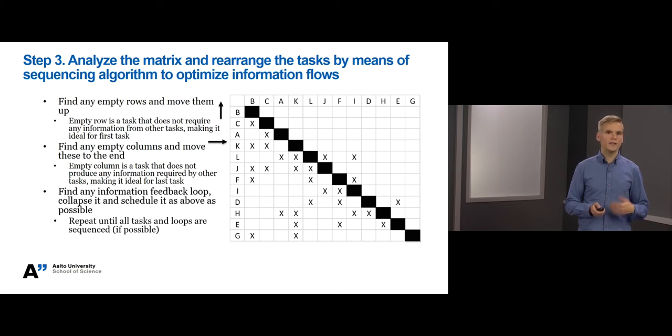So the design structure matrix is now complete. Let's observe it one last time. First, we can identify that tasks B and C are sequenced and ideal for project work. Second, we can observe that tasks A and K are parallel and they can be executed concurrently after tasks B and C. Third, we can see that tasks L, J, F and I and tasks E, D and H are coupled. Coupled tasks should be completed in collaboration to minimize iteration and information feedback loops. We can observe that the coupled task in the middle formed by tasks L, J, F and I is a challenging iteration process. Can we do something about it?